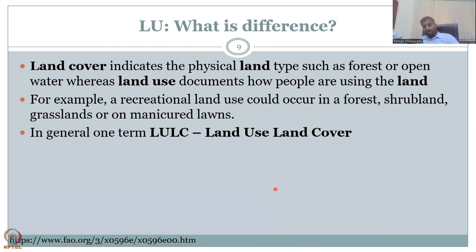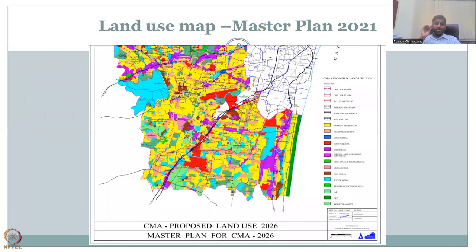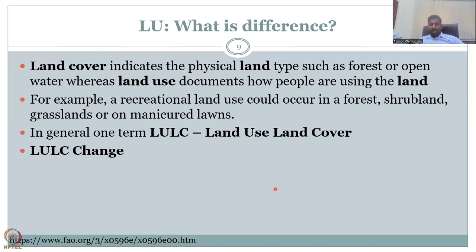Sometimes it is difficult to differentiate the two. For example, a forest could be man-made or natural — and how old does it need to be to be considered natural? These are time-specific images. When you say land cover, you should always ask for which year. This is time-bound information, and because of that time-boundedness, land use is associated with land cover. Both are merged together and called land use land cover — it is one combined term.